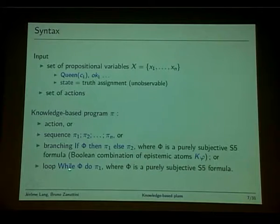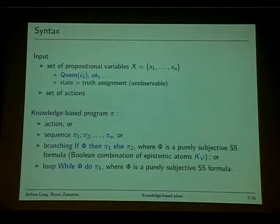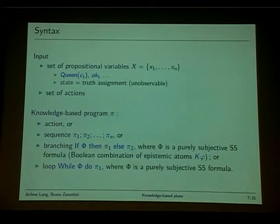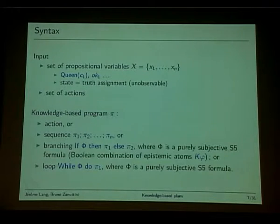We also have loops: 'while phi do phi-1,' where phi-1 is a knowledge-based program. By epistemic atoms, phi should be positive — it's an objective formula. Because we are in S5 with only one agent, we don't need nested formulas. We have only one agent.